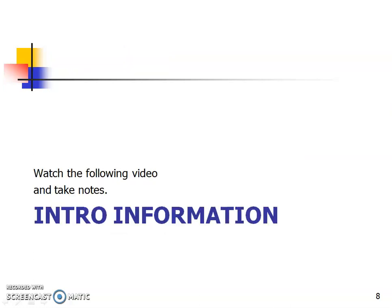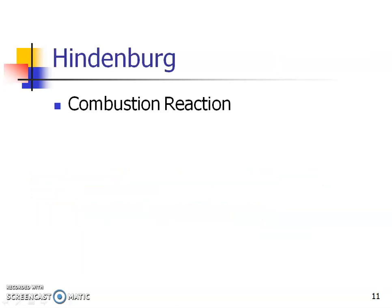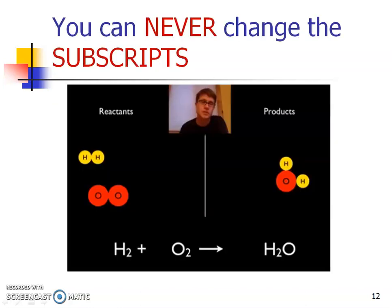You should have watched that intro information on Beginner's Guide to Balancing Equations. Here are my notes. He talked about the Hindenburg Reaction, which is really a combustion reaction. We want to remember that we never can change the subscripts of our formula. If we looked at H2O, that's always going to be water. But if you put H2O2, that would be hydrogen peroxide. You can never change the formula of that substance. You can only change coefficients.